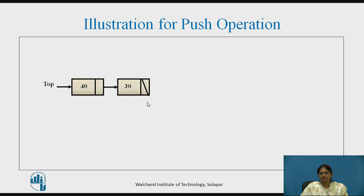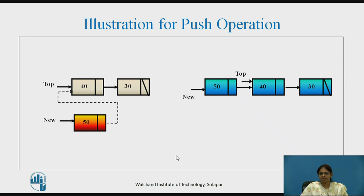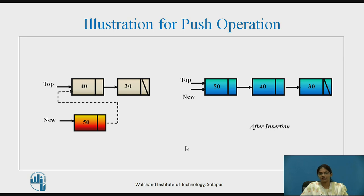Suppose these are the existing elements of the stack and top is pointing to element 40. To add a new node to this existing stack, the next of new is set to top. After doing this, the new node has been added at the beginning of the linked list, but top is still pointing to 40. So we set the top pointer to the new node — top is now pointing to the new node with value 50. This is after pushing the element to the stack.